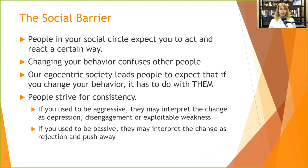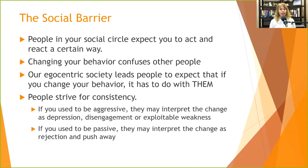The social barrier: people in your social circle expect you to act and react a certain way. If Sally has always been quiet and timid with no opinion and suddenly starts coming out with opinions, people won't know how to deal with that. If Jane has always been aggressive and dominant and suddenly backs off, people wonder: 'Are you depressed? Did something bad happen? Is it me?' Changing your behavior confuses other people.